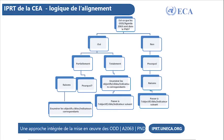La logique de l'IPART de la CEA : au centre, la question est de savoir si les ODD et l'agenda 2063 sont intégrés au PND. Si oui, on se demande à quel niveau. Si cet alignement est fait de façon partielle, on se pose des questions sur les raisons, qui se feront au niveau des objectifs, des cibles et des indicateurs correspondants. Si l'alignement se fait de façon totale, alors nous pourrons procéder à l'énumération des objectifs, des cibles et des indicateurs correspondants, et passer à l'objectif, à la cible ou à l'indicateur suivant.